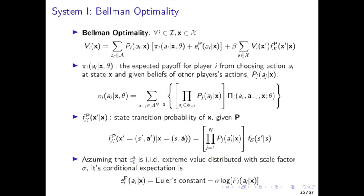Here is a version of the Bellman equation where you take the choice probability weighted sum over all the alternatives. Here you've got the payoffs conditional on the choice, weighted with the probability of the choice — just like we did when developing the Hotz-Miller inversion or the NPL algorithm. We also have this version of the Bellman equation where we represent it as a choice probability weighted sum of those expected payoffs. The conditional expectation of the epsilons given the choice AI and state X — if you have extreme value shocks — equals Euler's constant minus log of the probability of choosing action AI for player i.